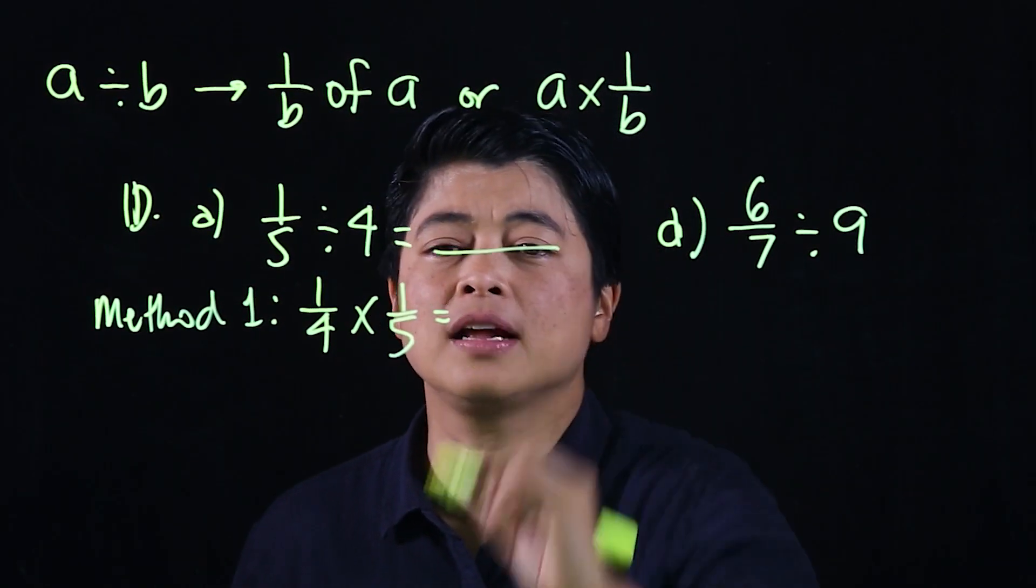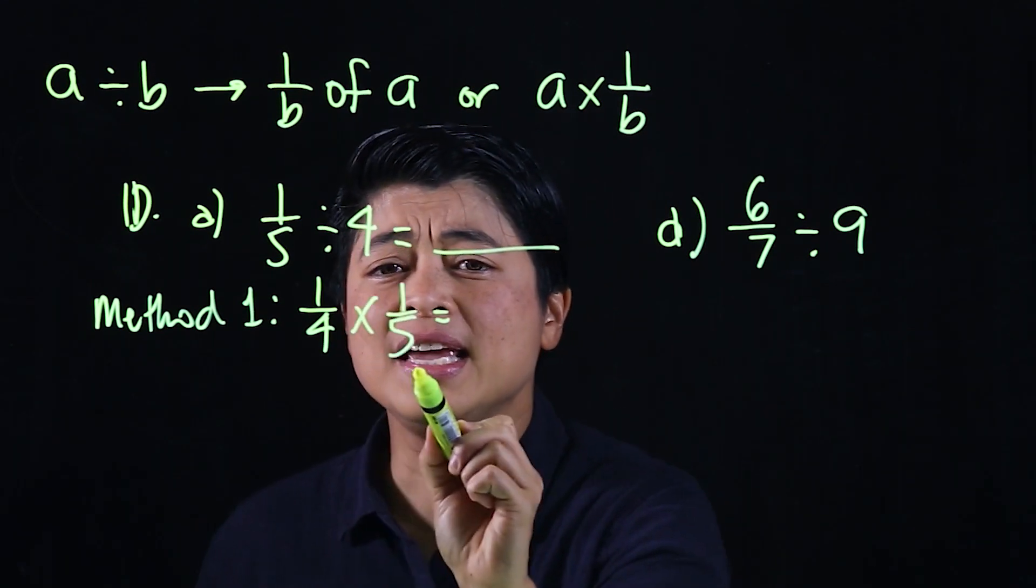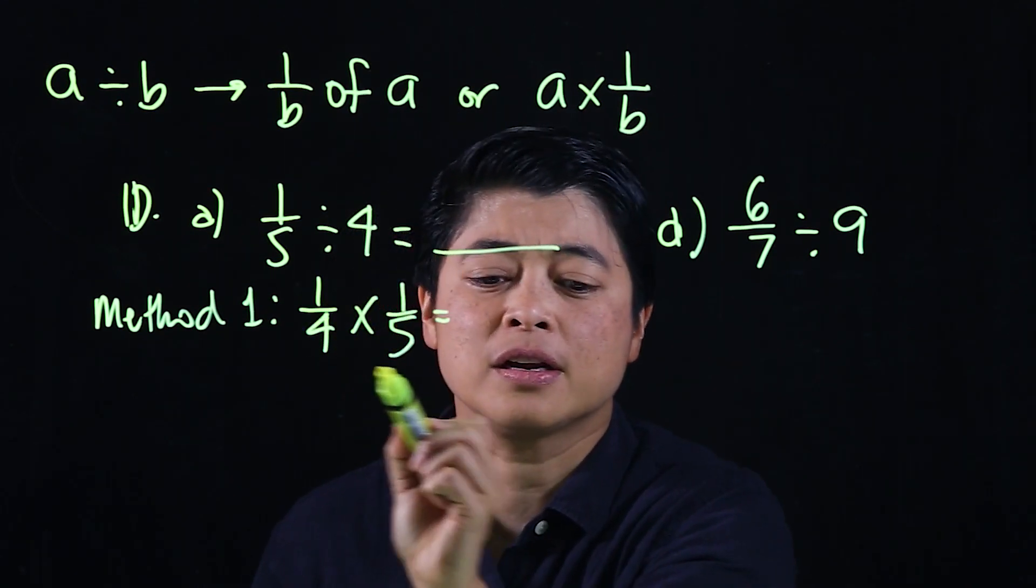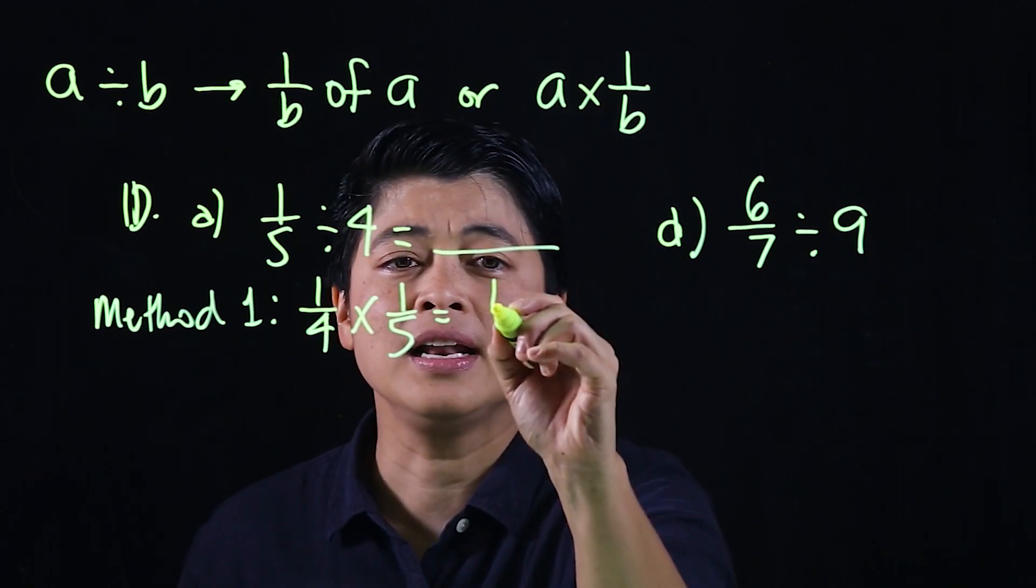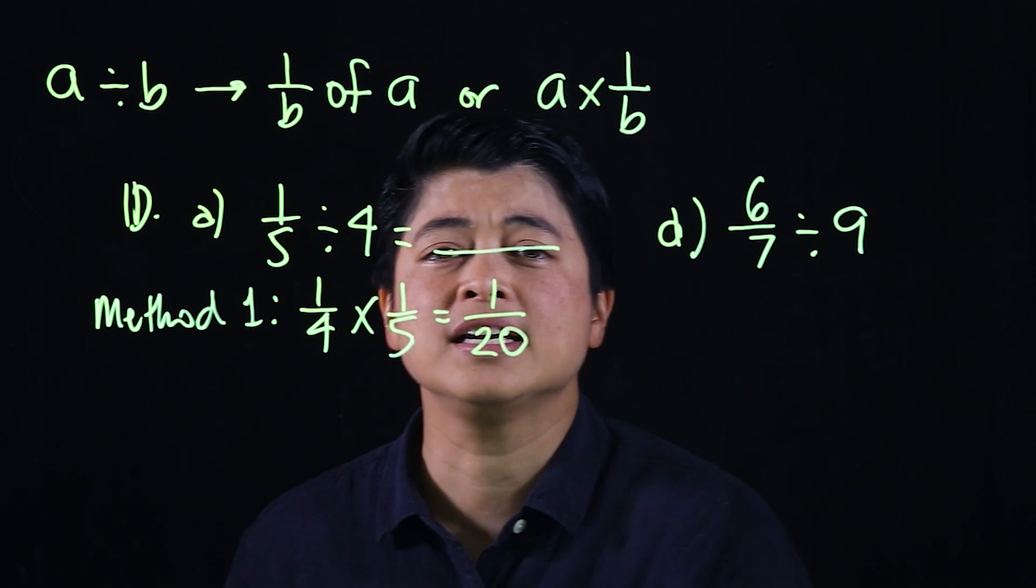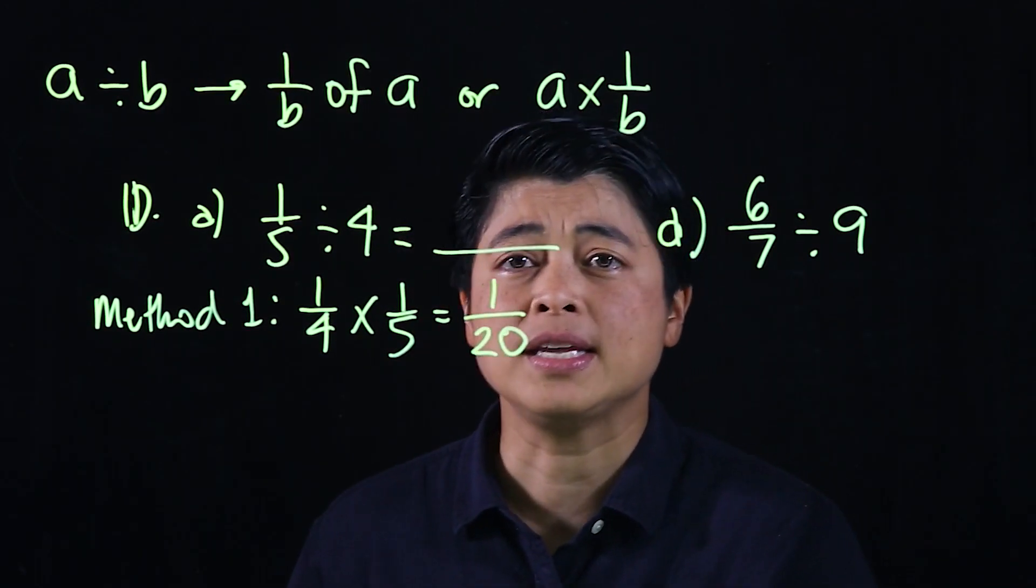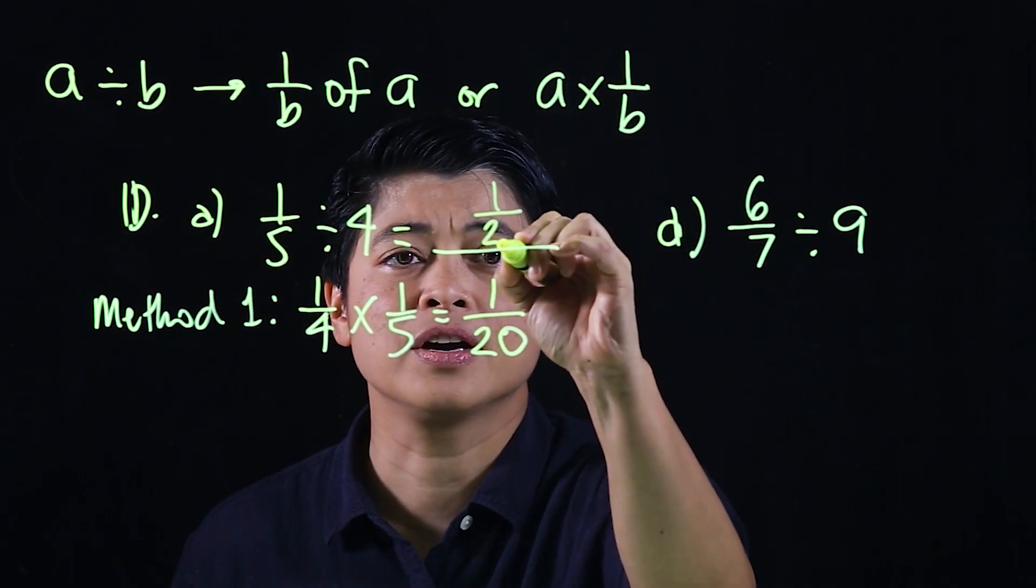If you look at here, there's nothing on the numerator that will cancel with anything on the denominator. So that means the final simplified form of this is 1 over 20.